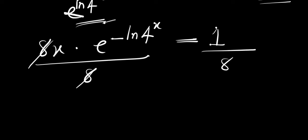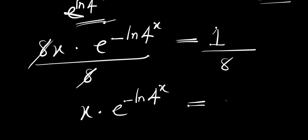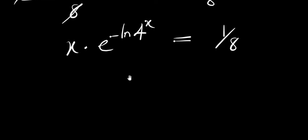After dividing by 8, the 8 cancels and we have x times e raised to the power of negative ln(4^x), and this equals 1 divided by 8.